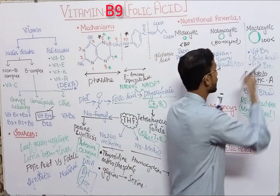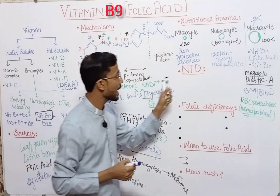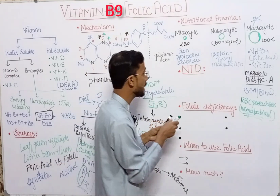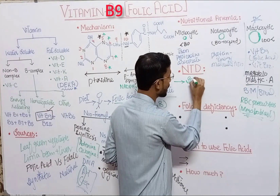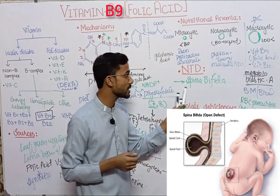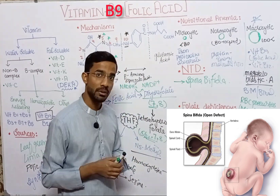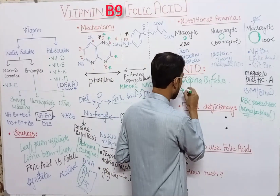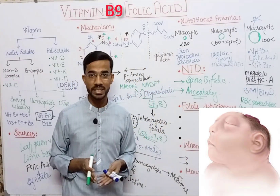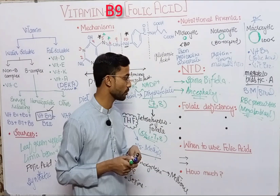You will see macrocytic anemia in cases of folic acid deficiency. The second major defect is neural tube defect, or NTD, which is also caused by deficiency of folic acid. It has two categories: first, spina bifida, in which there is a protrusion of the spinal cord on the back side of the infant; and second, anencephaly, in which a part of the brain is missing in the newborn.